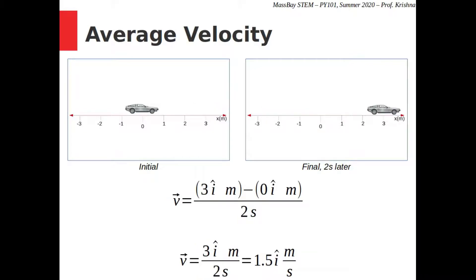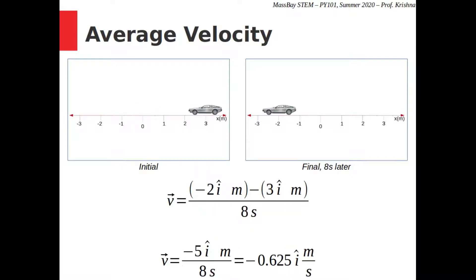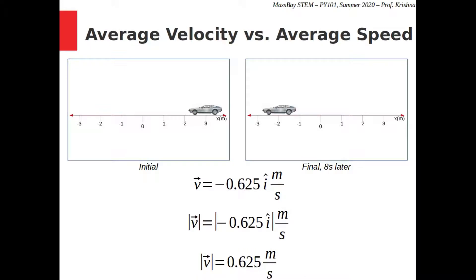Just like displacement, a positive velocity means the object is moving in the positive direction, while a negative velocity means it is moving in the negative direction. There is a scalar version of velocity — velocity without a sign or direction — called speed. But kinematics mostly uses vectors, so we won't see speed too much.